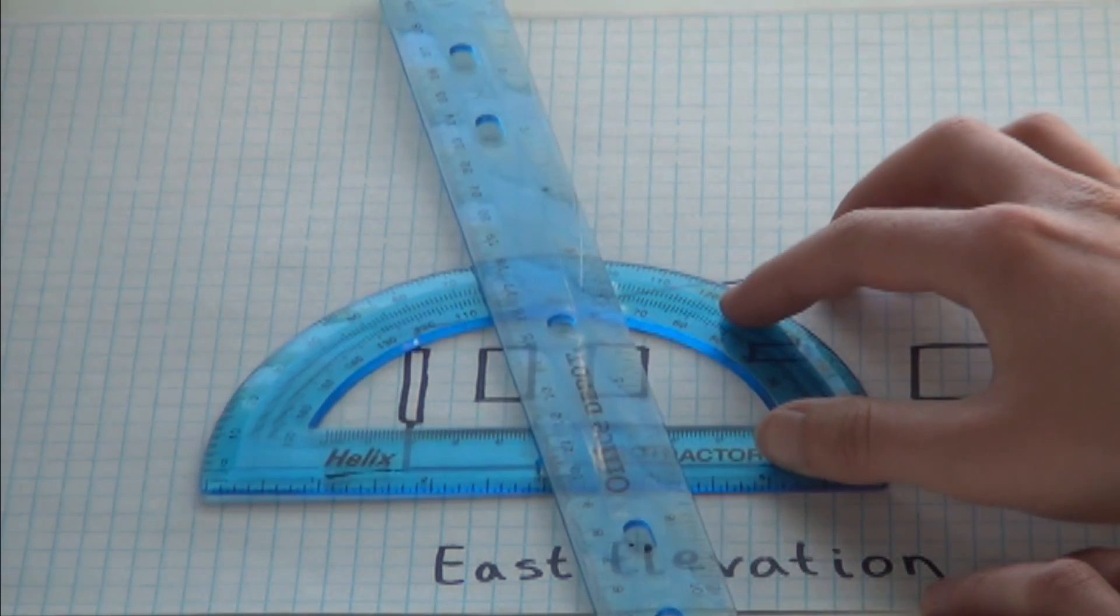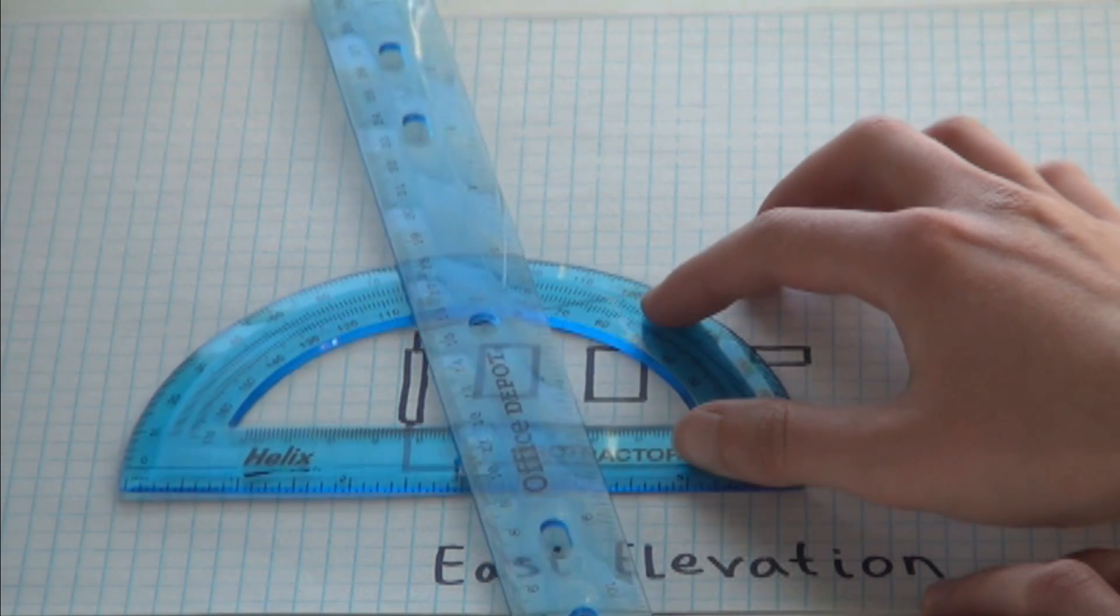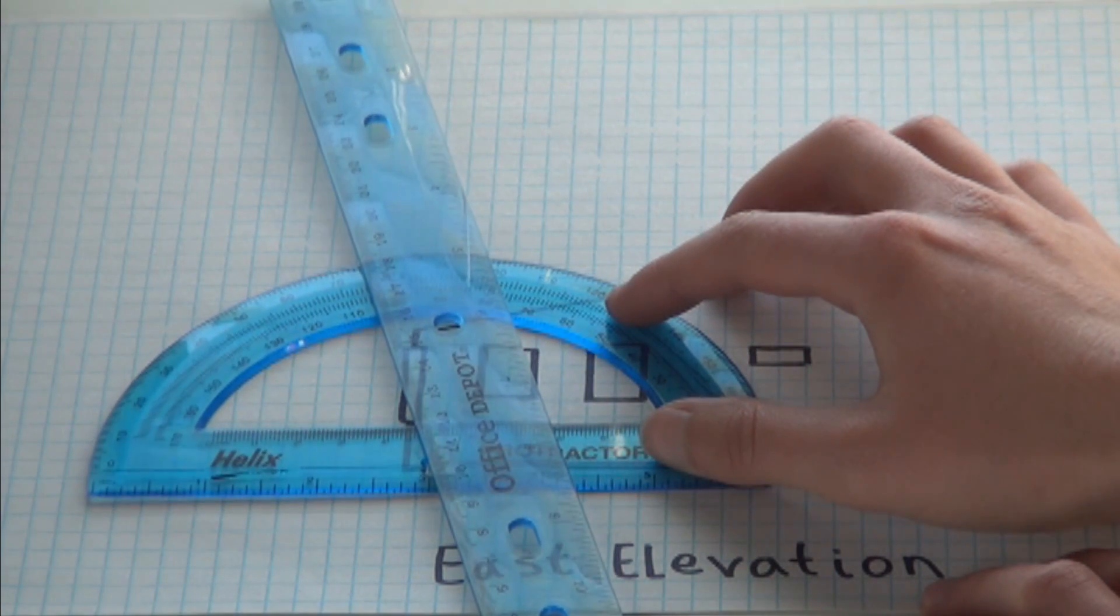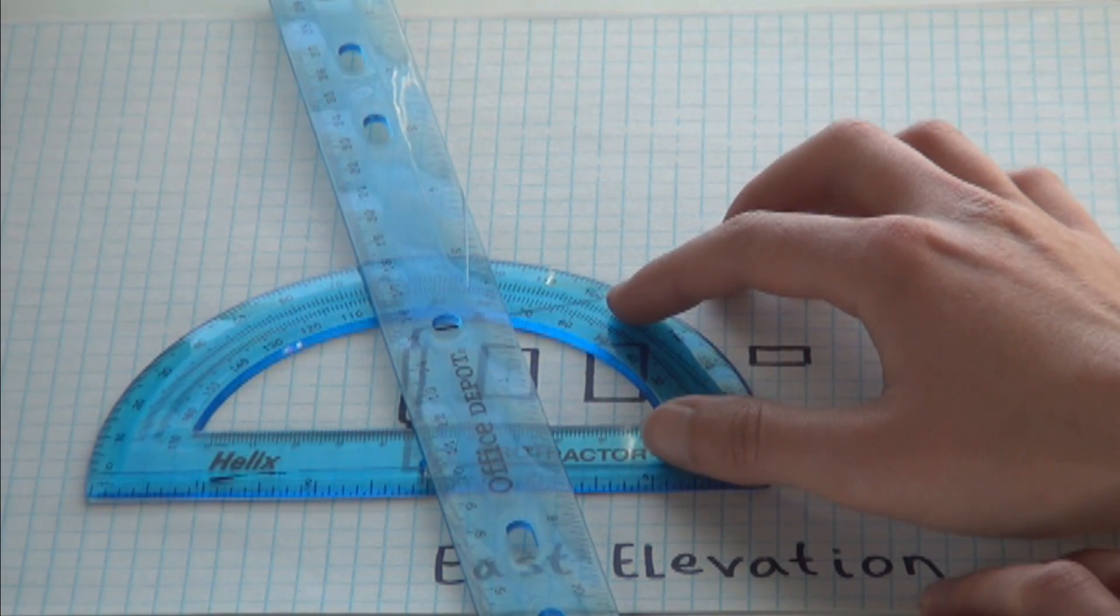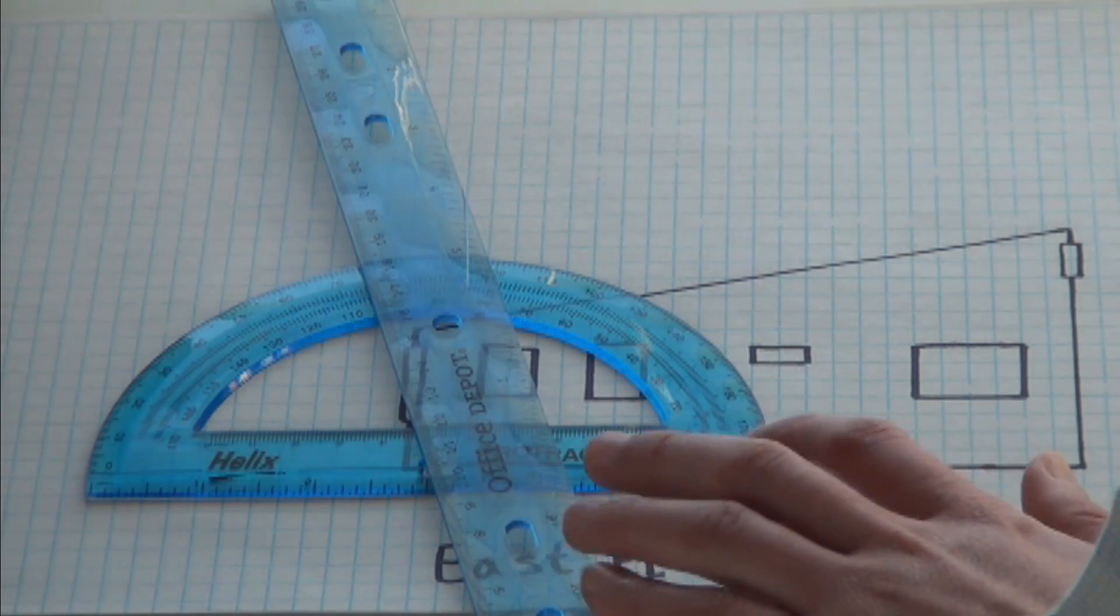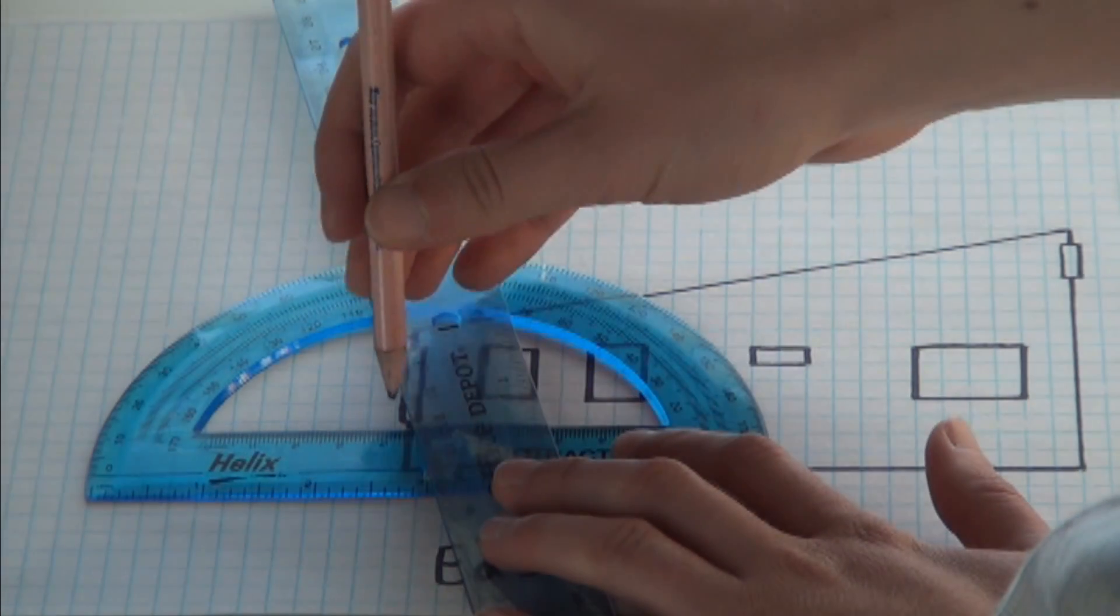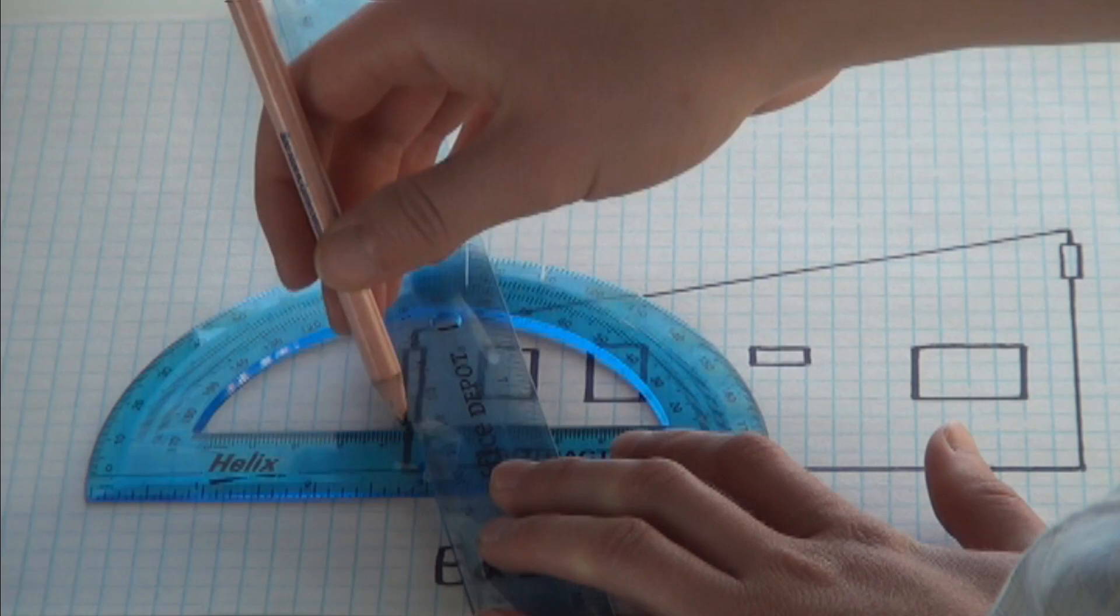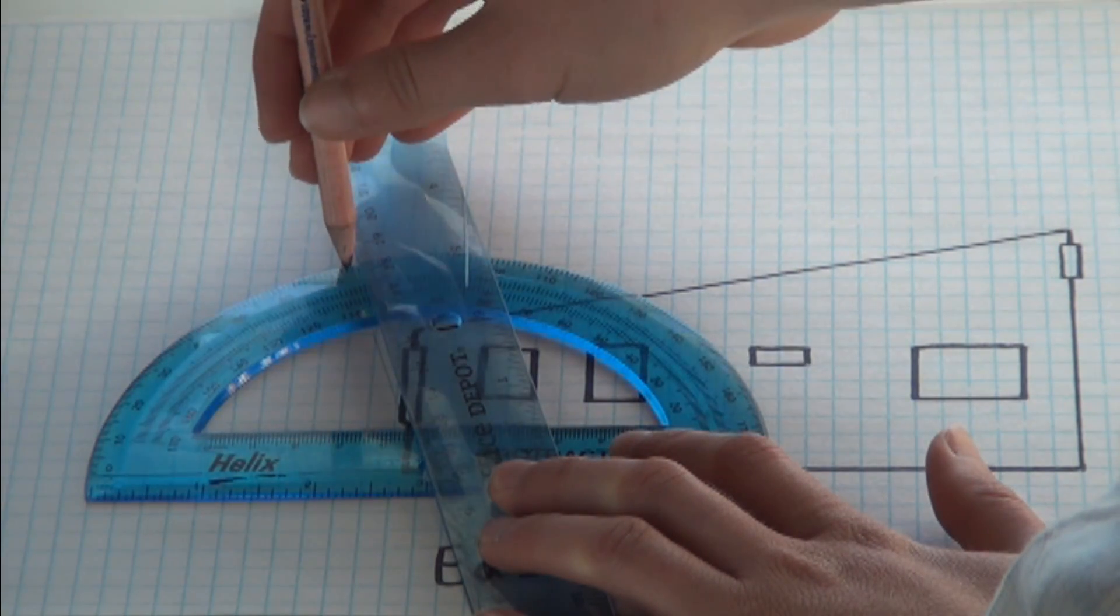Then use a ruler to measure the altitude of the summer solstice sun. For our house, that is 75 degrees. Slide the protractor along the house until the 75 degree line hits the bottom of the windows on the south side of your house. If you have glass doors, you may want to line up the summer sun angle with the bottom of the house and the bottom of the glass doors.